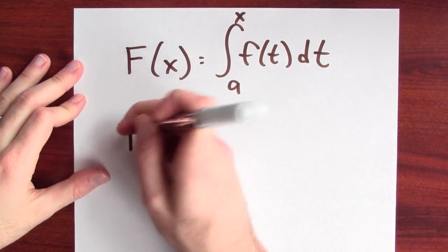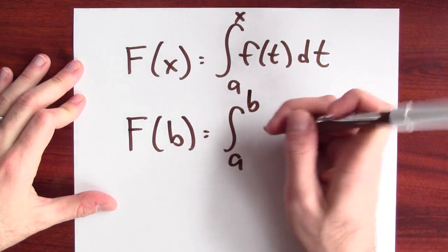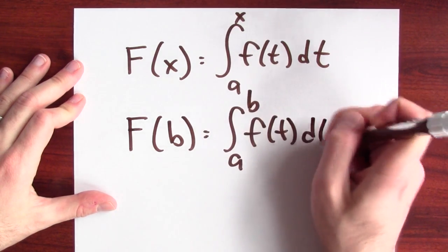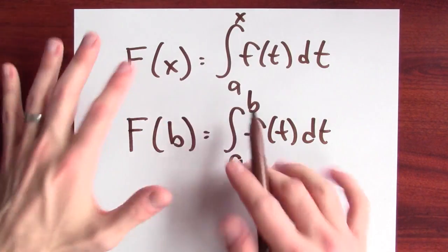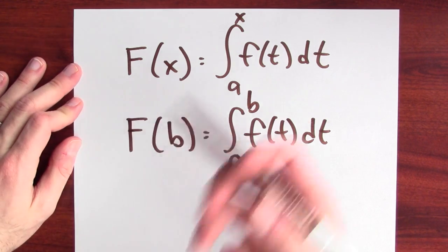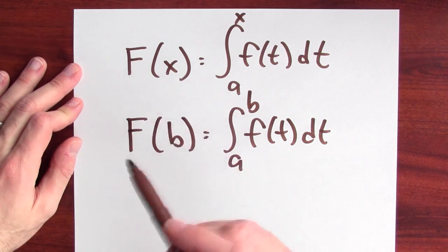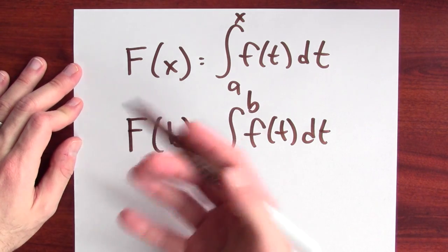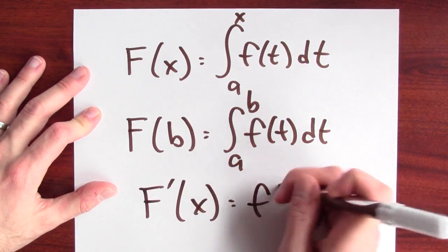I want to calculate big F of b. I want to be able to integrate from a to b, f of t dt. And by fitting F of b into this function F of x, I can then try to understand something about F of b. Because I know how big F changes. I know that the derivative of big F is little f.